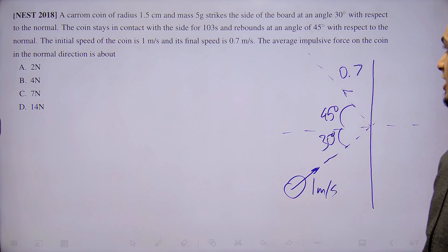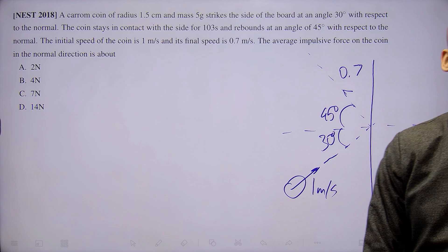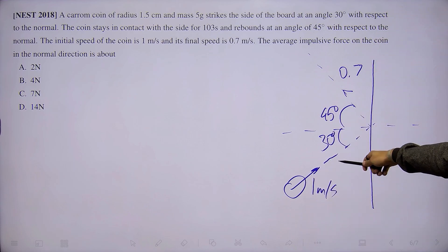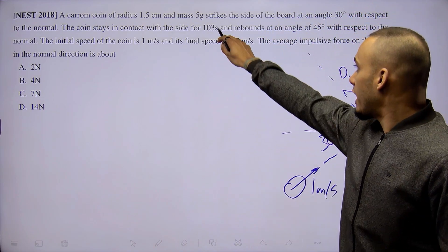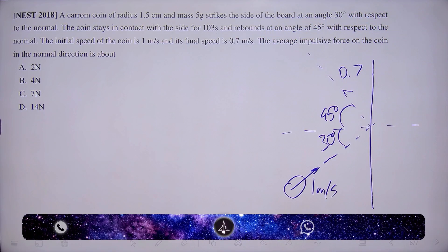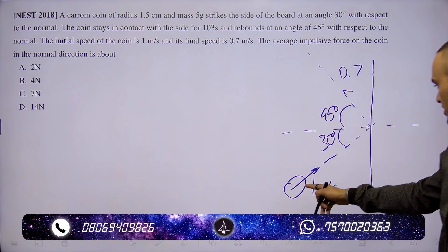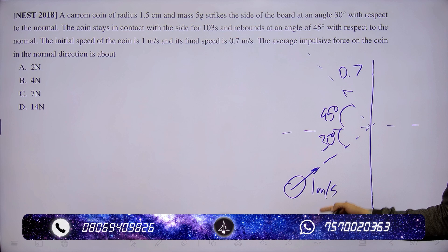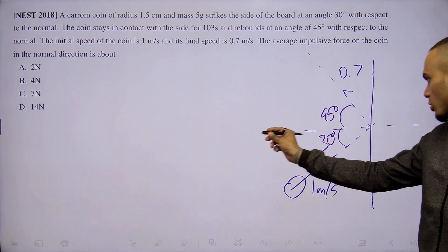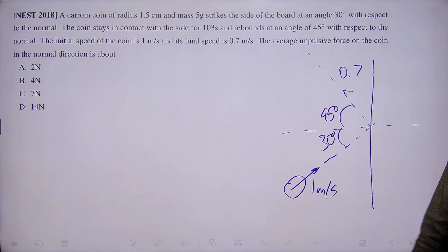Now we have been asked what is the average impulsive force that is exerted by the coin on the carom wall. We know that impulsive force is simply the total change in momentum times the time of contact of the collision. Since the carom coin hits the board at a slight oblique angle, only the momentum that is normal to the plane of collision gets transferred.